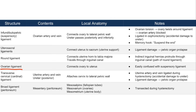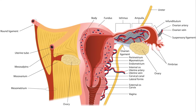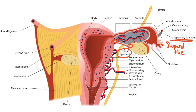Now let's talk about the ovarian ligament. This connects the ovary to the uterus. It's included on this table because it can often be mistaken for other ligaments, such as the suspensory ligament. The ovarian ligament goes from the uterus to the ovary. Don't confuse this with the suspensory ligament, which connects the lateral portion of the ovary to the lateral wall. Remember: 'suspend the end' — the suspensory ligament attaches to the end of the ovary and suspends it to the lateral pelvic wall.